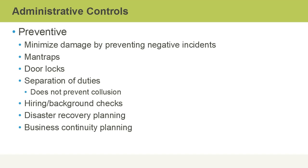Door locks are considered preventative administrative controls, as is the separation of duties. Separation of duties ensures that we don't have one person that can control an entire business process from beginning to end — we have multiple people involved. However, if those people have colluded together to commit fraud, for example, separation of duties can't prevent that. Hiring and background checks are definitely preventive administrative controls related to personnel, as is disaster recovery planning and business continuity planning, to ensure that we can get systems and business processes back up and running as quickly and efficiently as possible in the event of a negative incident.